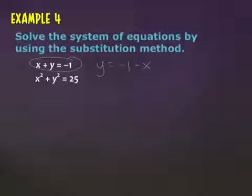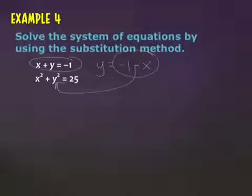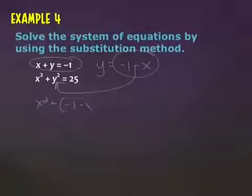Now that I've used that one to solve for y, I have to take that and plug it into the y in the second equation. So x squared plus negative one minus x, all squared, equals 25. I still have to expand and FOIL, but these will be a little bit easier numbers.